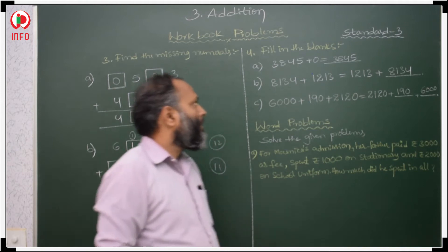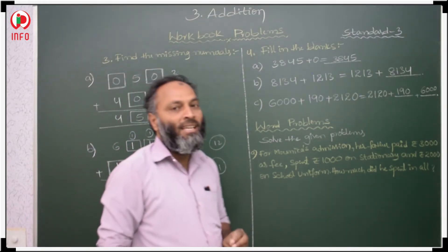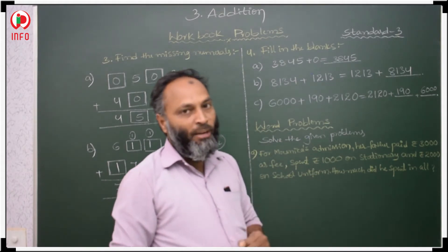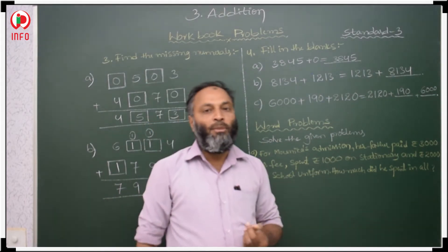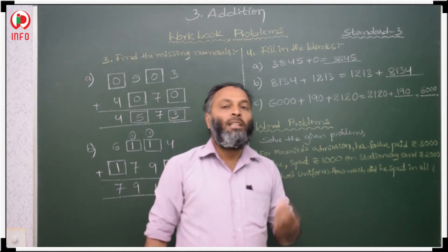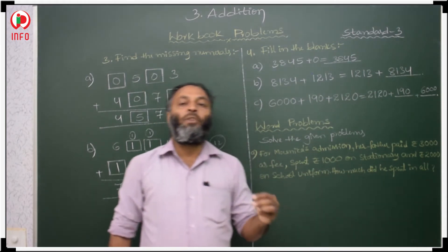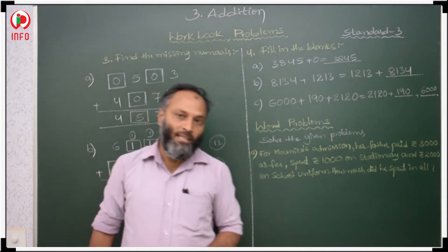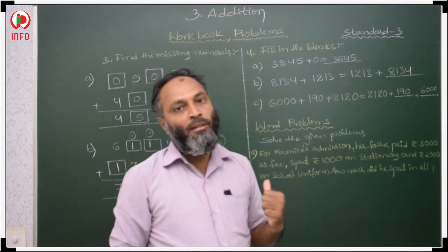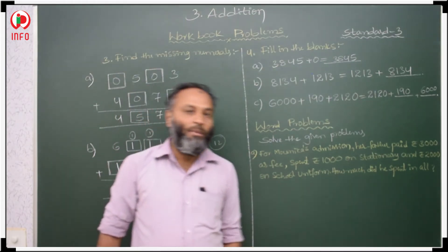Rules in addition — two rules. First: if zero is added to any number, we get the same number. Second: if the order of the addends changes, there is no change in the sum. Third: if one is added to any number, we get the successor of that number. Fourth: if one is subtracted from any number, we get the predecessor.